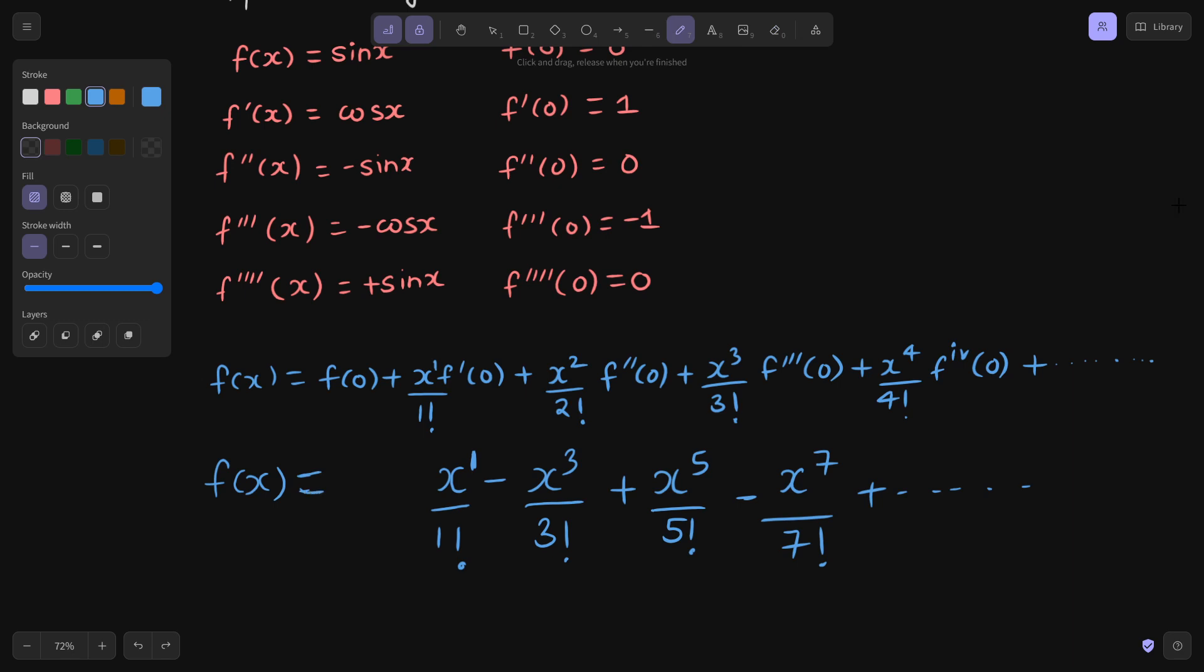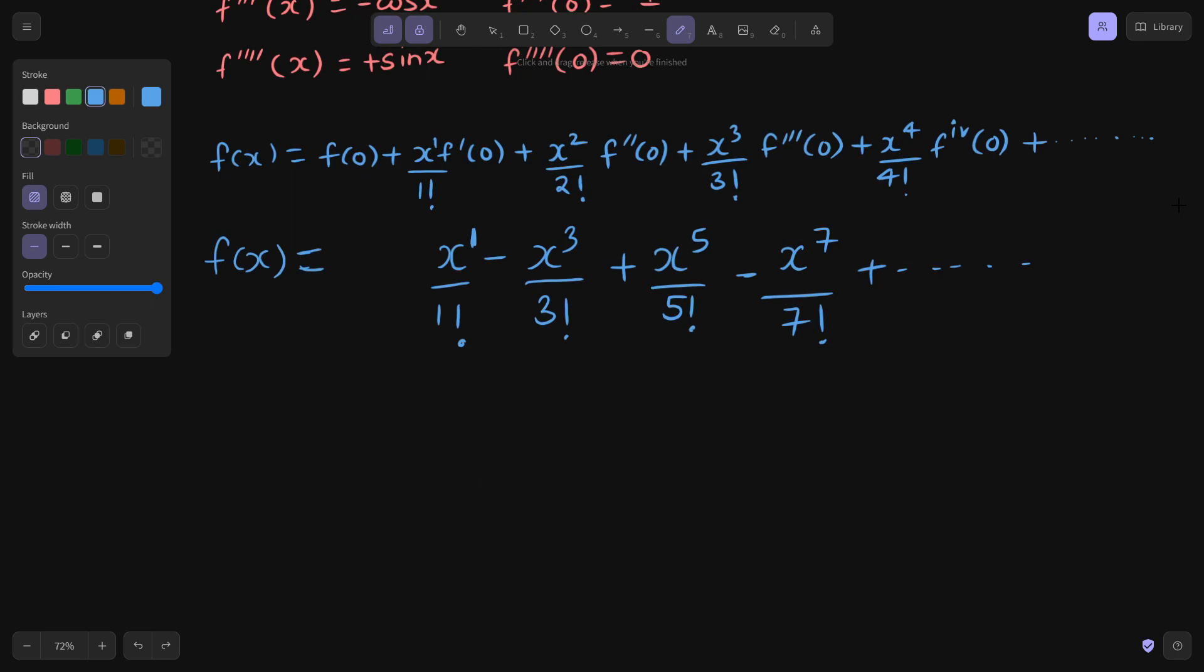So whatever is the power of x, same is the factorial in denominator. And you are getting alternate plus minus. And you are getting power in difference of 2, so 1, 3, 5, 7. So 3 things to remember if you want to remember this. First: power and factorial same. Powers are like 1, 3, 5 and so on. And the third thing, that you are getting alternate plus minus.